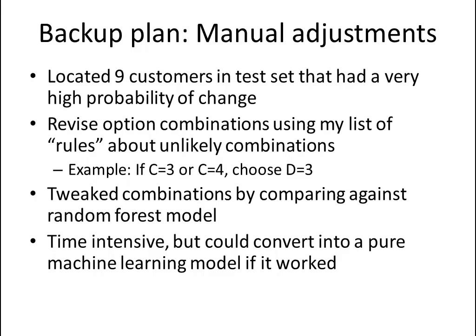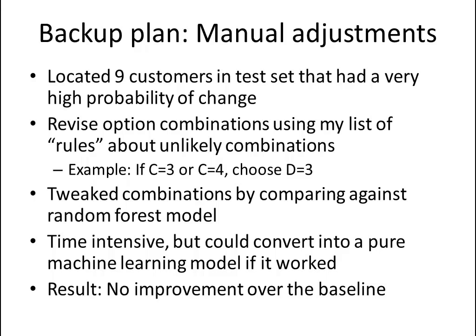But I did have a backup plan. Instead of machine learning, I decided to do some human learning and try to outthink the computer. I located nine customers in the test set with a very high probability of changing from their last quote, went through my list of rules about unlikely option combinations, and one by one went through each customer looking for unlikely combinations and changing them — tweaking by comparing against my random forest model. This is a very time-intensive method, but unfortunately it was a huge waste of time because it did not work.